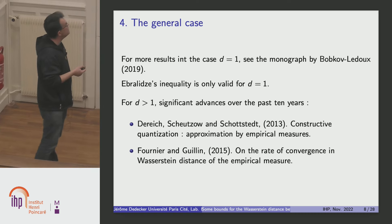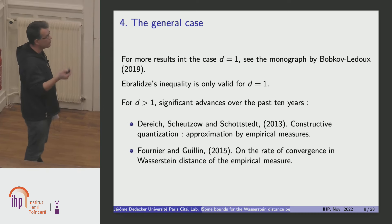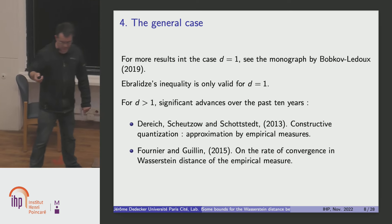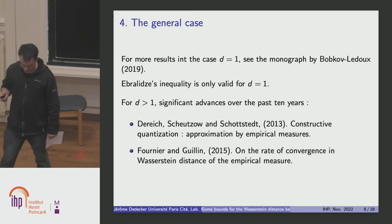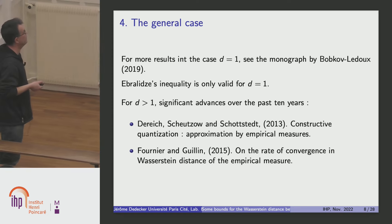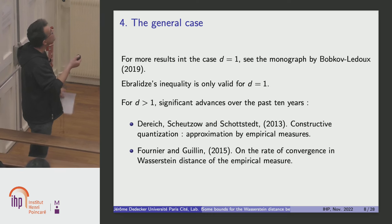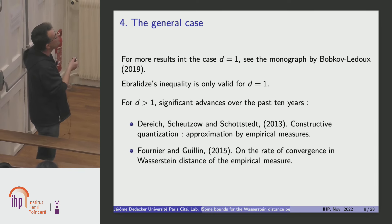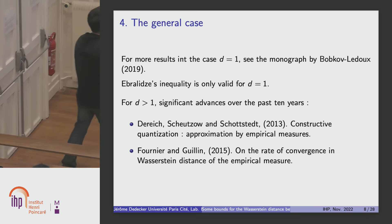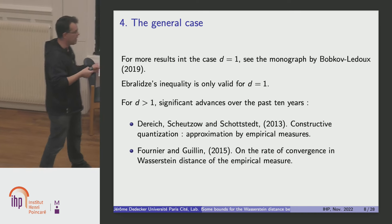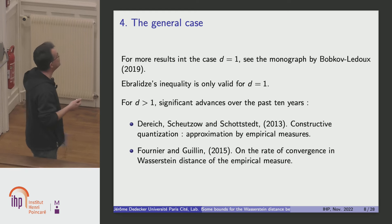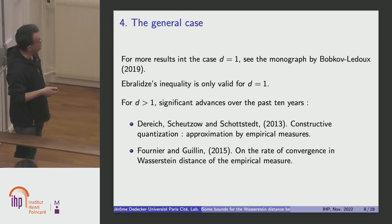In the case d equal to 1, there are also other results requiring more assumptions on mu to get other rates of convergence. Everything is well explained in a recent monograph by Bobkov and Ledoux. Now I want to consider the general case. We cannot start from the Brenier inequality, which is true only for d equal to 1.